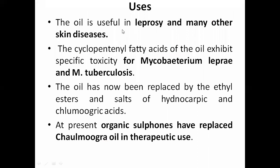Uses: the oil is useful in leprosy and many other skin diseases, since it has a bactericidal effect — it can kill the microorganisms that cause infection, particularly bacterial ones such as the mycobacterium causing leprosy. The cyclopentyl fatty acids of the oil exhibit specific toxicity for Mycobacterium leprae and Mycobacterium tuberculosis. Therefore, Chalmogra oil becomes important as it covers two major diseases — leprosy and tuberculosis — which remain challenging to treat. The cyclic acids are formed during the last 3–4 months of fruit maturation.